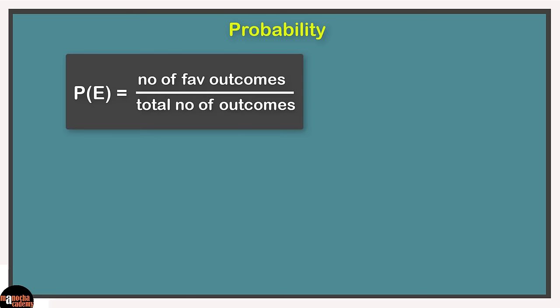Let's place the probability formula on our concept board: probability of an event, denoted by P(E), is equal to the number of favorable outcomes divided by the total number of outcomes.